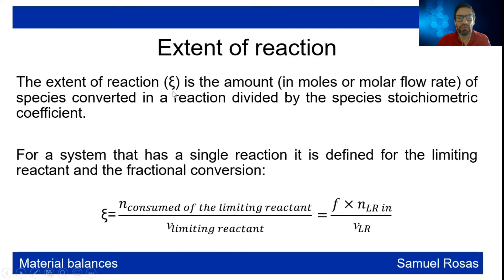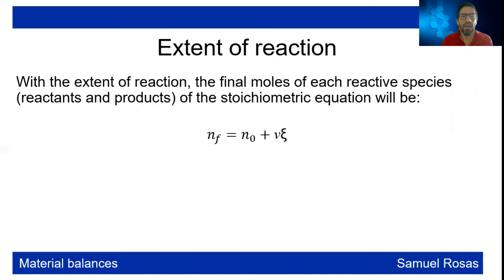This is the symbol we use for the extent of reaction. For a system with a single reaction, it is defined for the limiting reactant, and the fractional conversion is the amount of moles consumed of the limiting reactant over the stoichiometric coefficient of the limiting reactant. This equals f, the fractional conversion, times the number of moles of the limiting reactant entering the system over the stoichiometric coefficient. The final moles of each species — reactants and products — will be: n_final = n_initial + (stoichiometric coefficient × extent of reaction). The extent of reaction is common for all species.